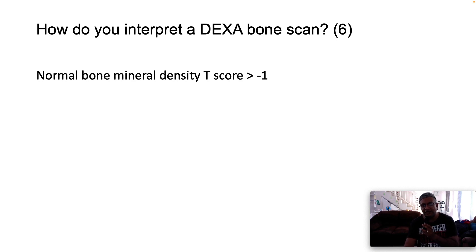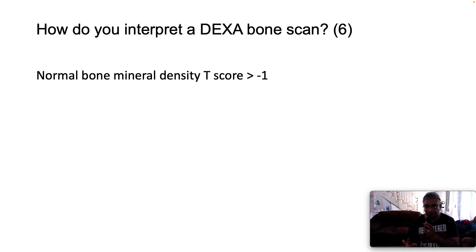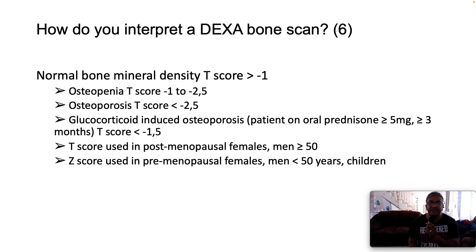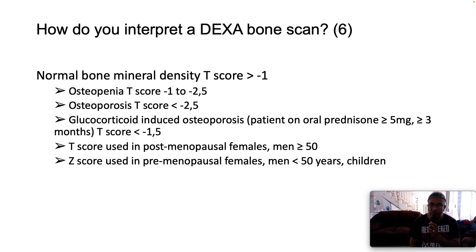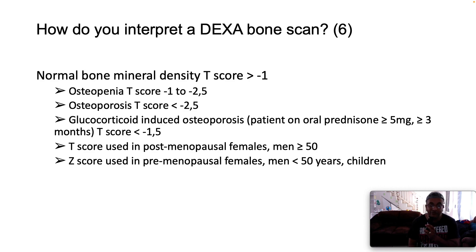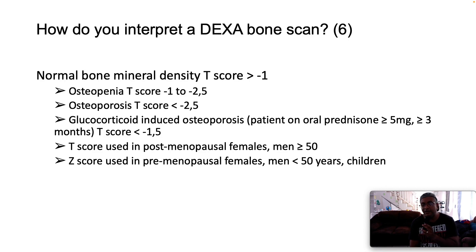Normal bone mineral density T-score is greater than minus one. When we speak about T-scores, we are comparing the patient's BMD to that of a young sex-matched control. Osteopenia is a T-score between minus one and minus two point five. Osteoporosis is when your T-score tips below minus two point five. Glucocorticoid-induced osteoporosis applies to a patient taking prednisolone at a dose above 5mg daily for the last three months, with a T-score below negative 1.5.